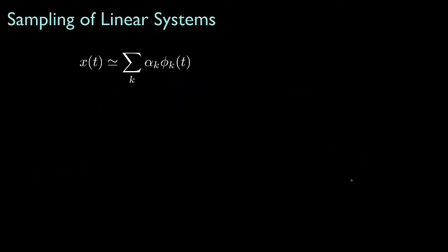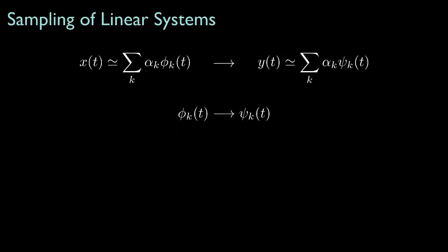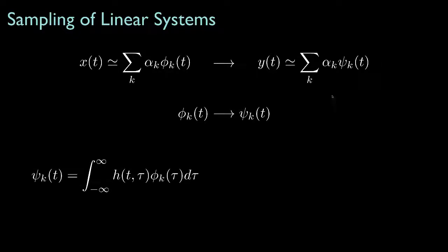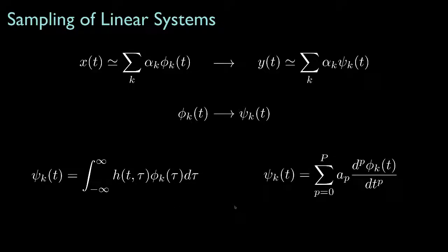Let's suppose that we sample the input to a linear system relative to some basis phi sub k. If this signal is input to a linear system, then the output of the system will be the superposition of the responses for each of the basis functions. If we've characterized the system by its impulse response, the relationship between those two bases will be found through the superposition integral. And if we've characterized the system by a differential equation, we could use that to find the relationship between the two basis functions.